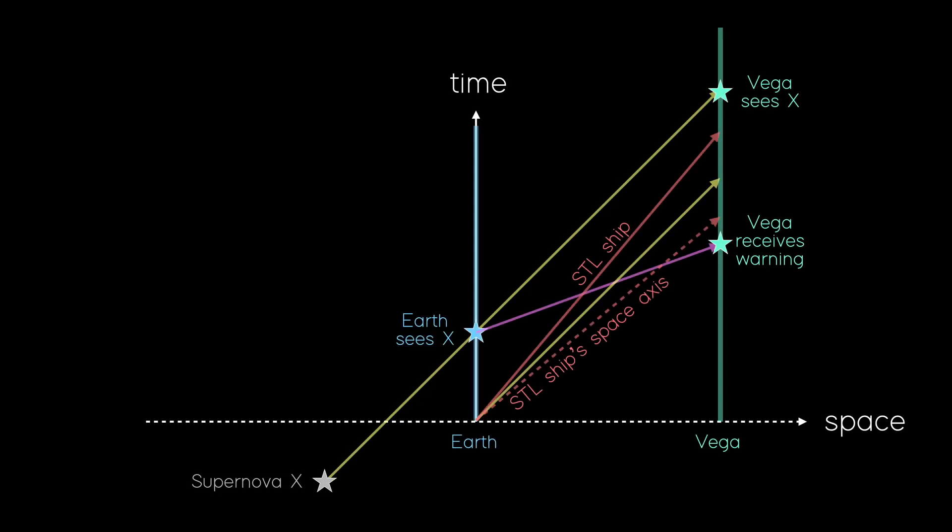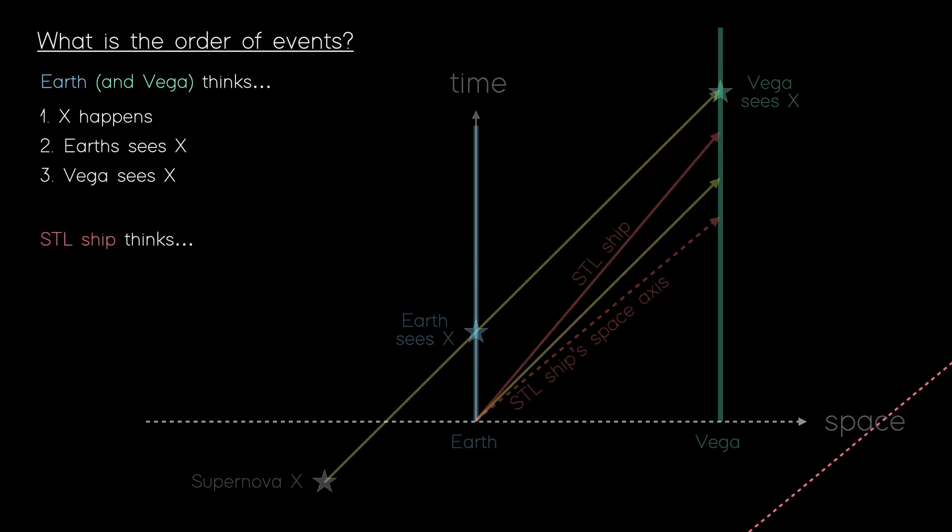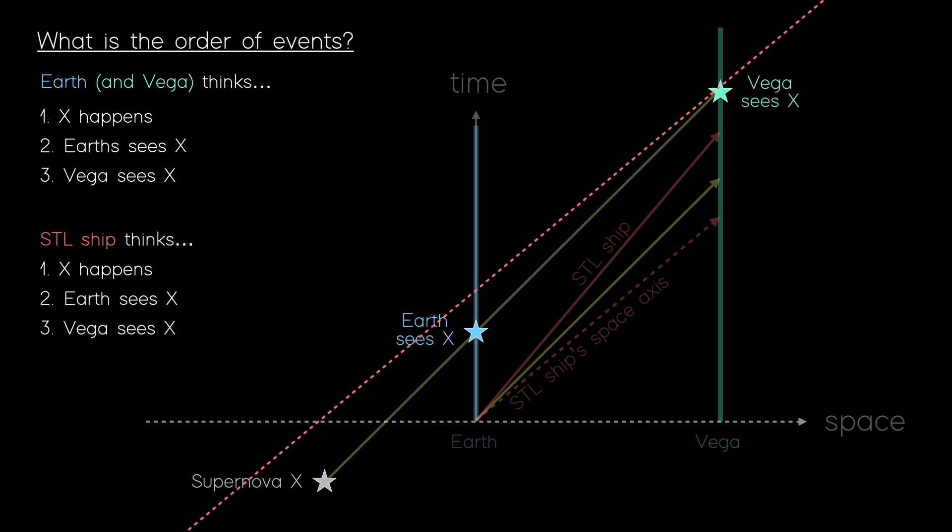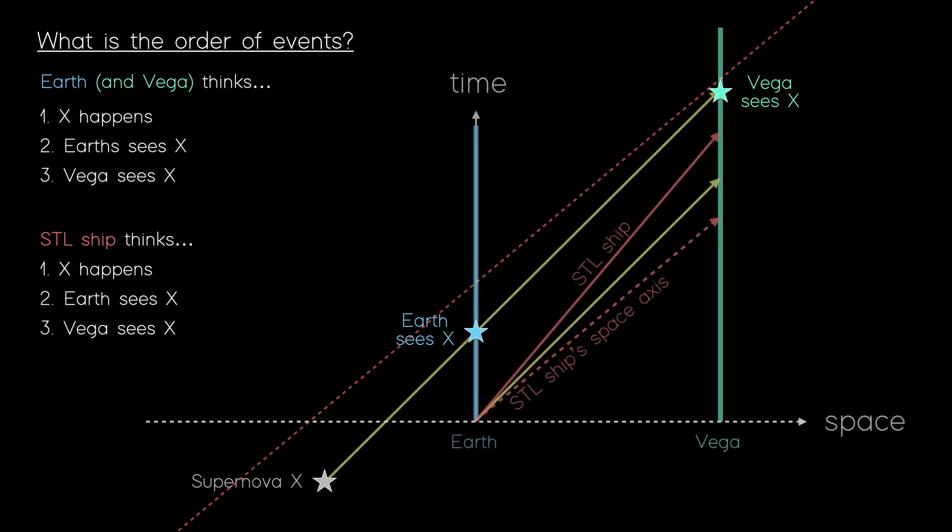So let's repeat the experiment, but now I've removed that FTL message. Sliding our time slice along, we see that the first event is now Supernova X. Next, the second event is that Earth sees X. And finally, the third event is that Vega sees X. So the sequence makes perfect sense now. No causality violation.